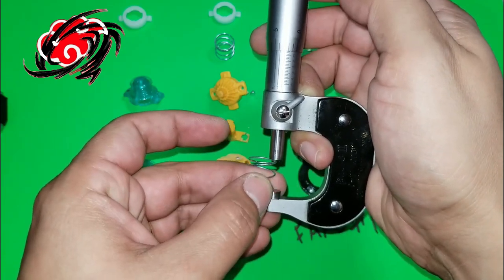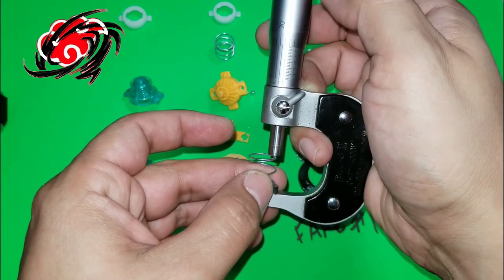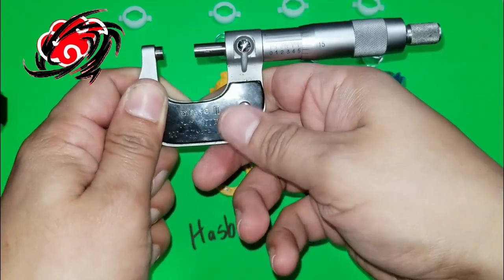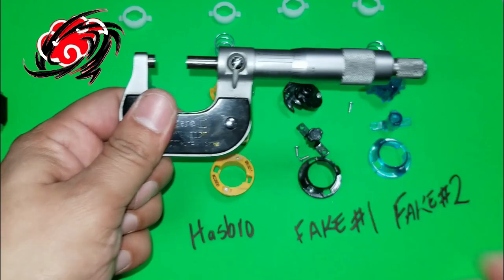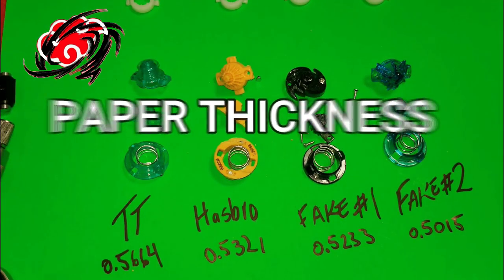Now looking at the measurements here from all the way to TT and the fake, the fake number two, the smallest one, the difference between them is as big as the thickness of paper, of drawing paper to be precise. So not very big difference at all.